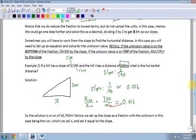So I have that written here. The solution is 18,750 meters. Notice we set up the slope as a fraction, with the unknown value in this case being the run, which we called x, and set it equal to the slope that I knew. So the slope should be 3 over 190. In this case, we have a rise of 300, which means that my run is going to be basically 100 times that value. So you get 18,750, roughly.